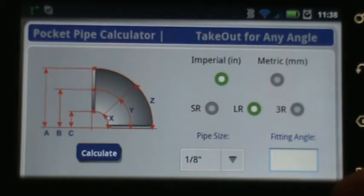On the left you'll see a 90 degree fitting with labels ABC and XYZ. Those will be the six values that we're going to generate today.